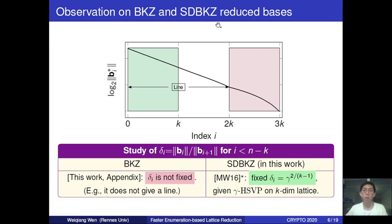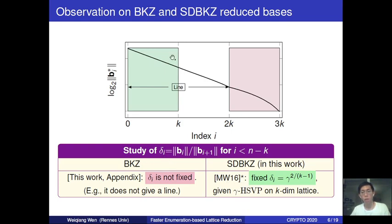First let's review the quality of the prior algorithms. Suppose this is the Gram-Schmidt log norm of the reduced basis after running SDBKZ with a size-k SVP solver. The quantity delta_i, denoting the ratio between two successive Gram-Schmidt norms, is well studied by Micciancio and Walter 2016, which shows that delta_i is fixed for different indices i outside the last block—introducing a straight line outside the last block. I will call delta_i the slope of this line.